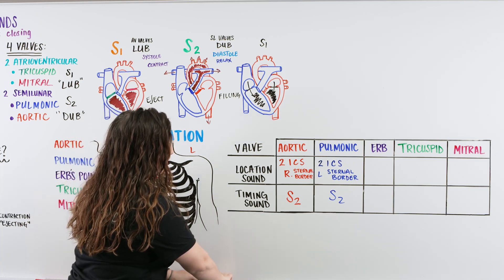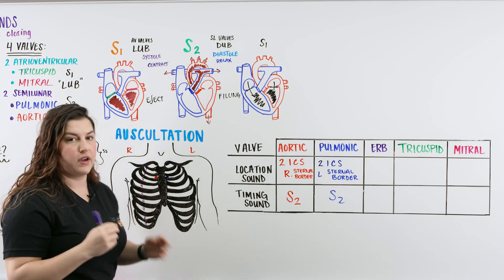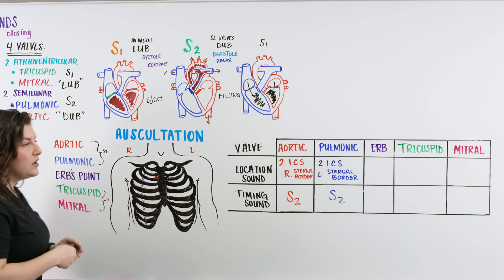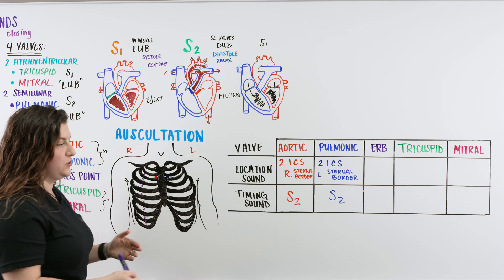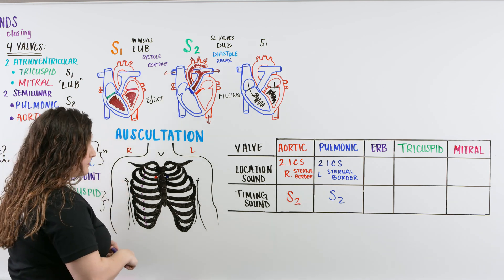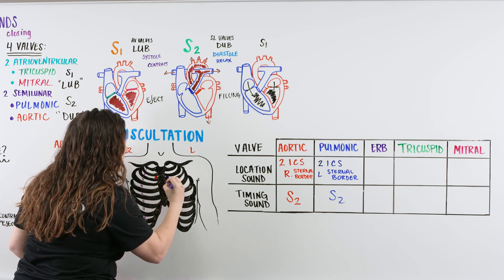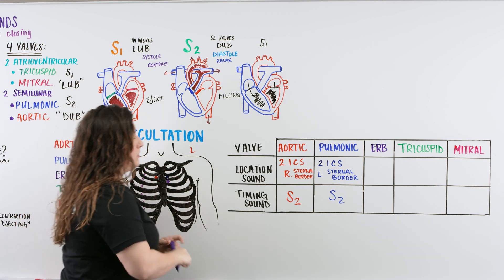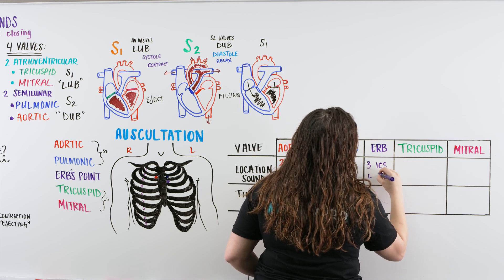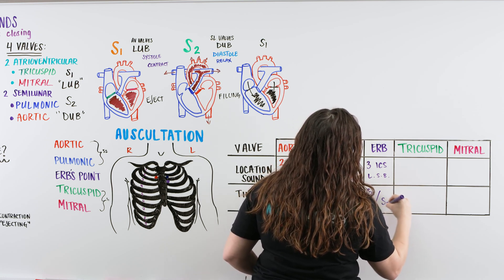Now we move into Erb's point. Erb's point is the area where, when we listen to the chest, we should be able to hear S1 and S2 equally — it's the best spot to listen to both sounds at the same time. As a nurse, if your patient is on telemetry, you can listen and look at the monitor to see if sounds are correlating with the beats. Erb's point is the third intercostal space, left sternal border. You can hear both S1 and S2 there.